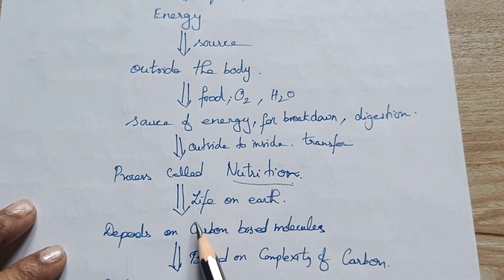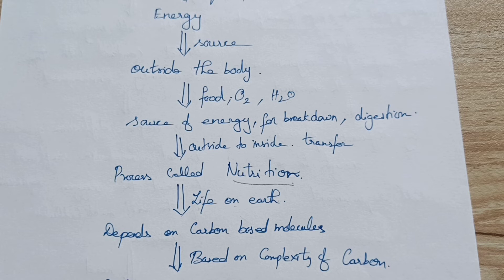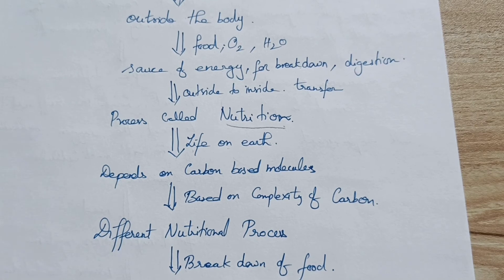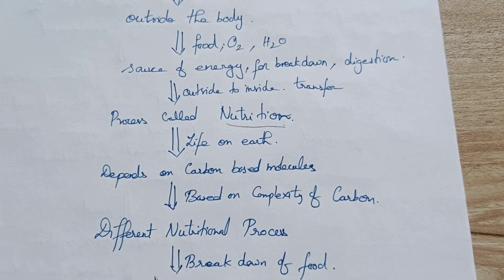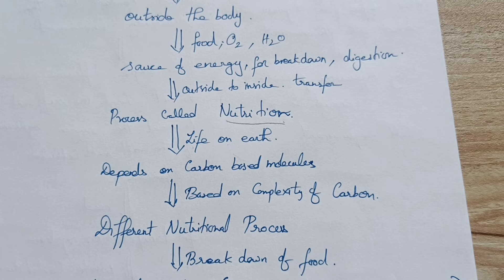Life on earth is mostly based on carbon-based molecules. Based on this complexity, different organisms have different nutritional processes. The process of taking in food from outside to inside is not the same for all organisms — it will differ from one organism to another based on what type of carbon molecules are being taken in and how complex or simple they are.